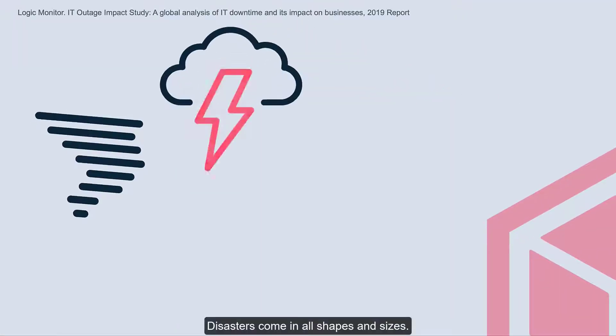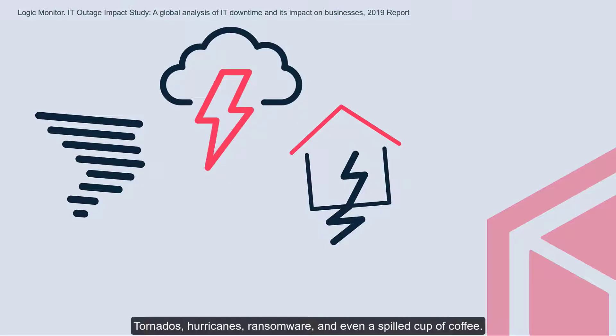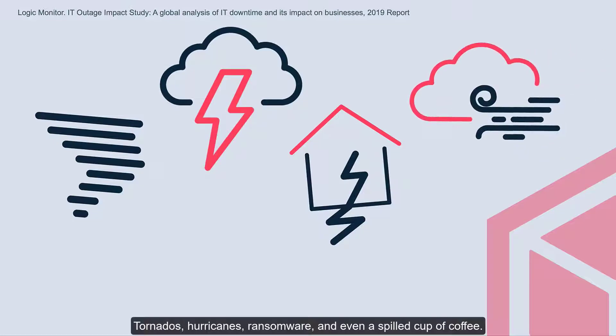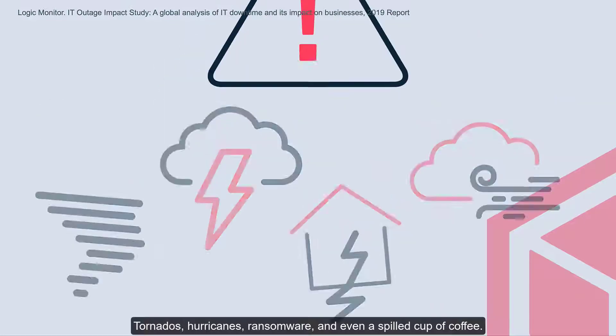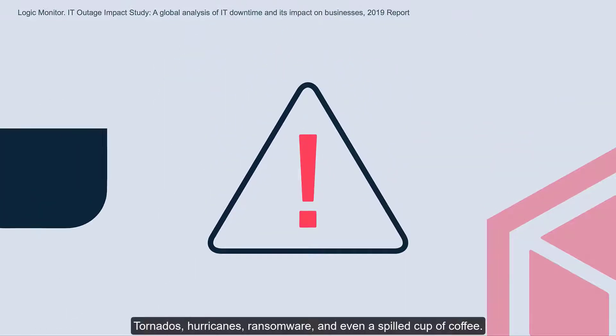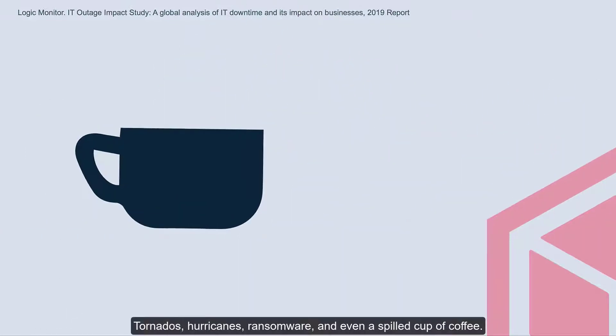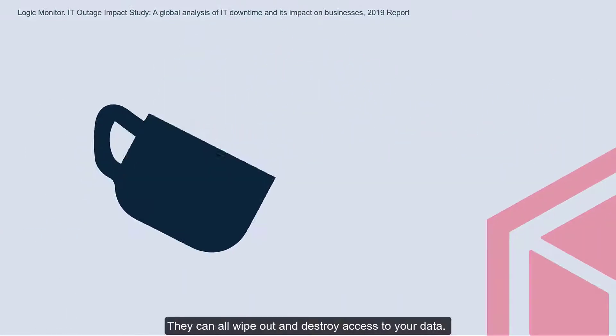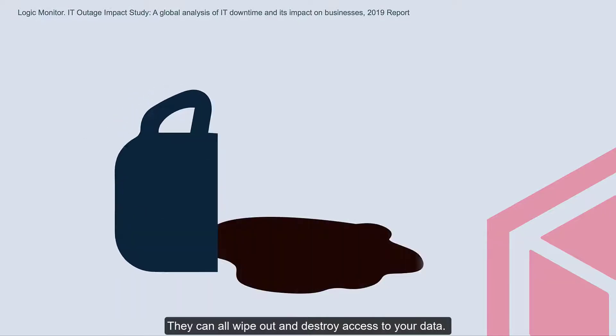Disasters come in all shapes and sizes — tornadoes, hurricanes, ransomware, and even a spilled cup of coffee. They can all wipe out and destroy access to your data.